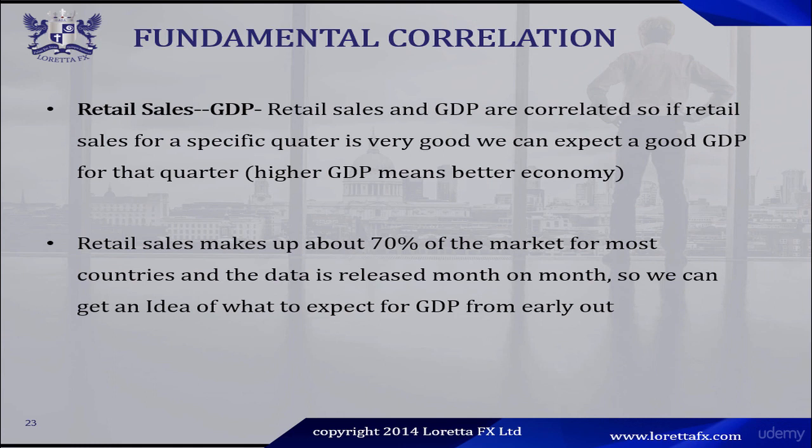Retail sales are released each month, while GDP is released every three months — every quarter. So we can use the retail sales for a specific quarter to give us an idea of what to expect for the GDP of that quarter. The reason retail sales have such a strong correlation with GDP is because for most countries, retail sales make up about 60 to 70% of the GDP. So if we have very good retail sales for a specific quarter, we can expect a potentially good GDP for that quarter.